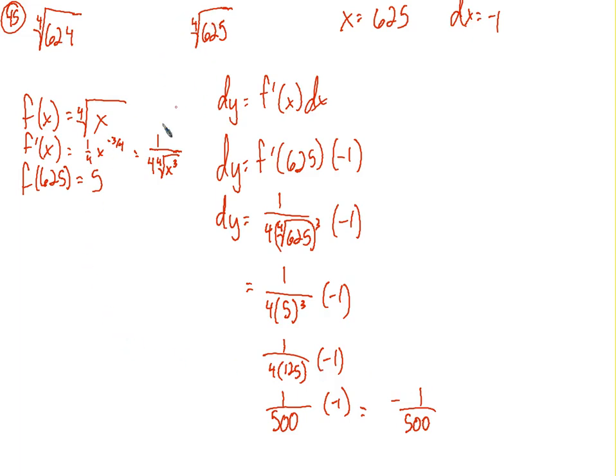So, we'll take the 4th root of 625, or f of 625, we'll subtract 1 over 500. This is a y value. This is the change in the y value. So, 5 minus 1 over 500. This would be 2500 over 500. Minus 1 over 500. That would be 2499 over 500.